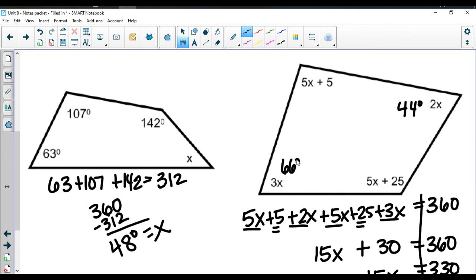5 times 22 is 110, so plus 5, this will be 115. 5 times 22 is 110, plus 25 will give me 135. When I add all those up, I'll get 360 then.